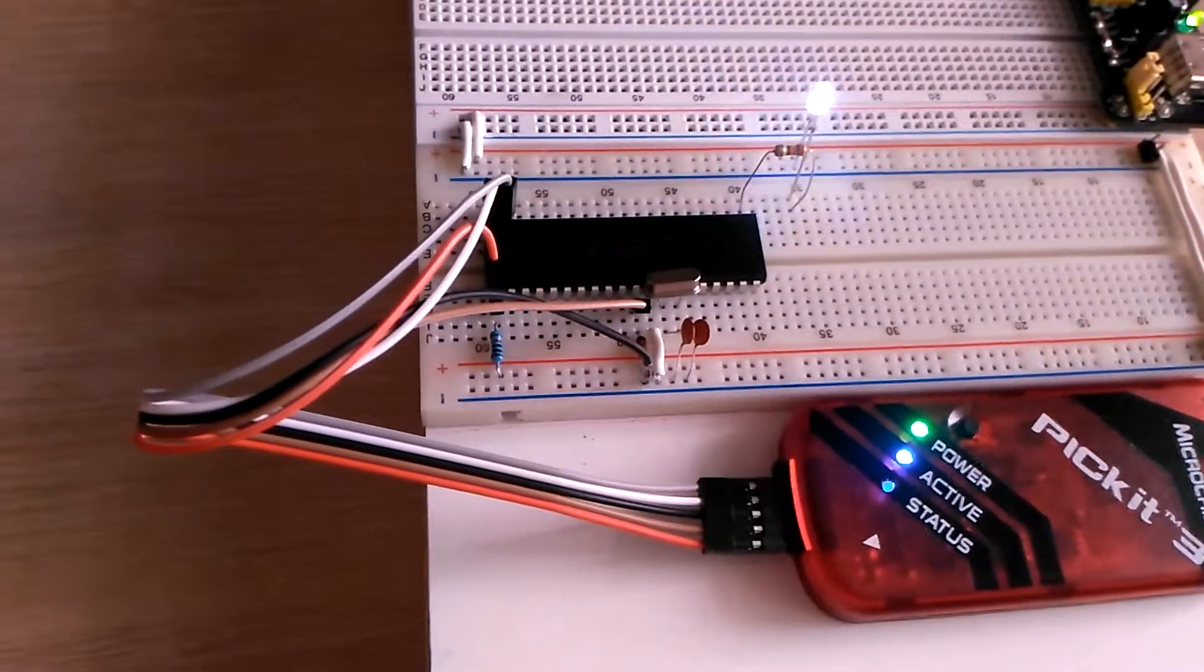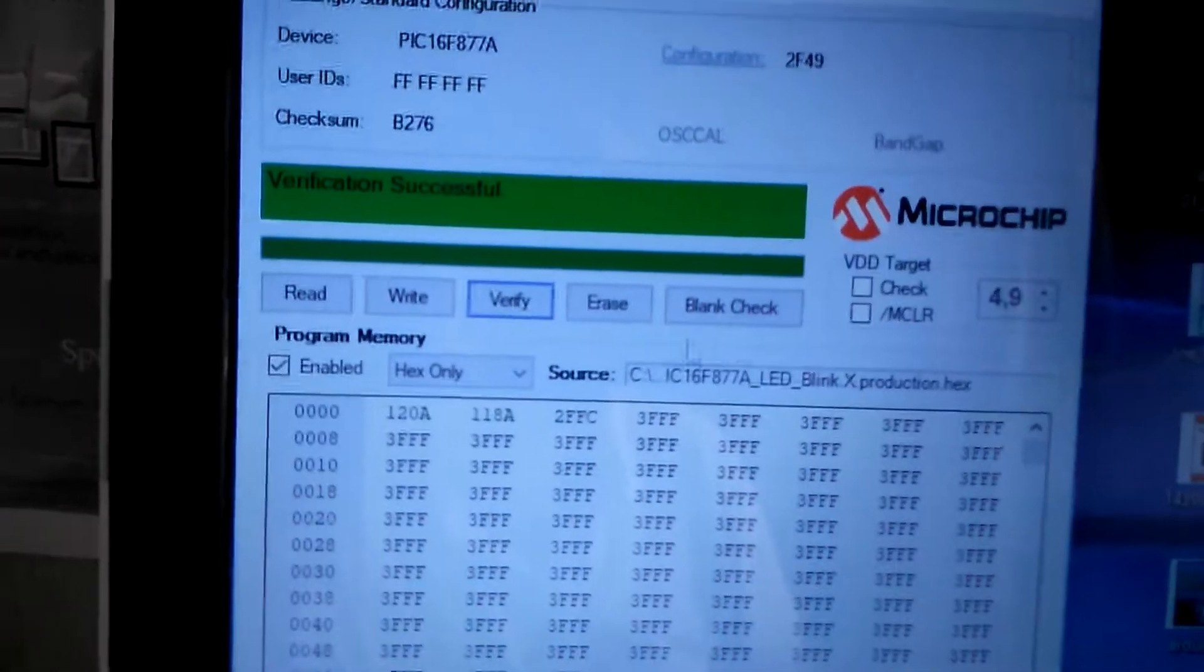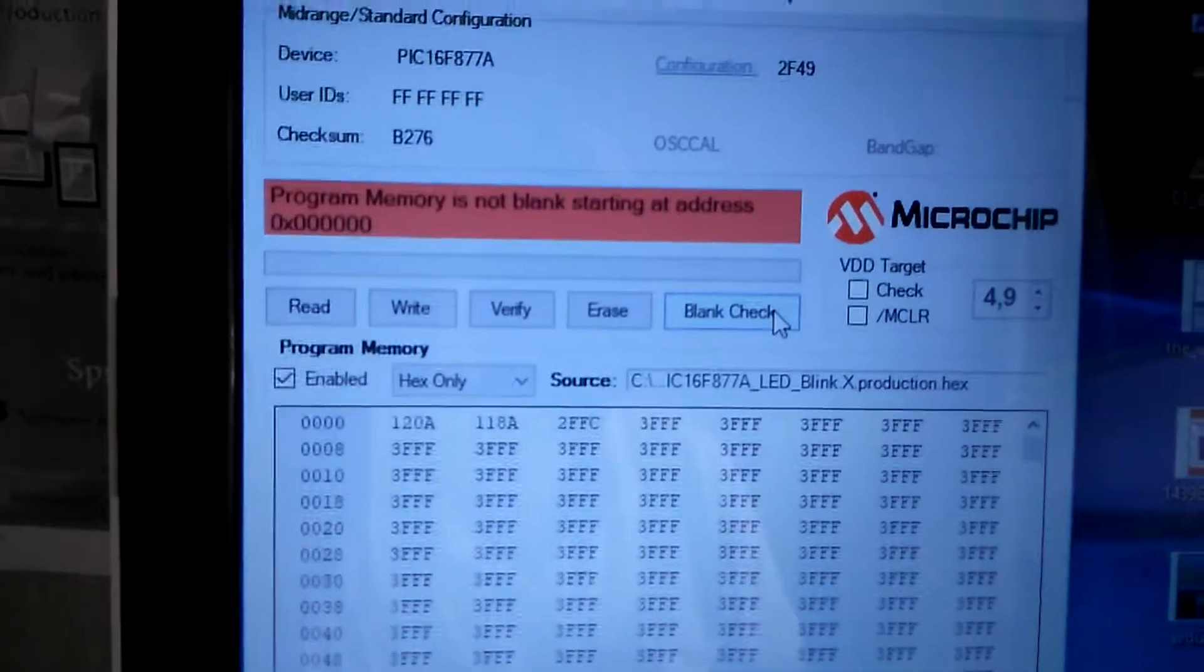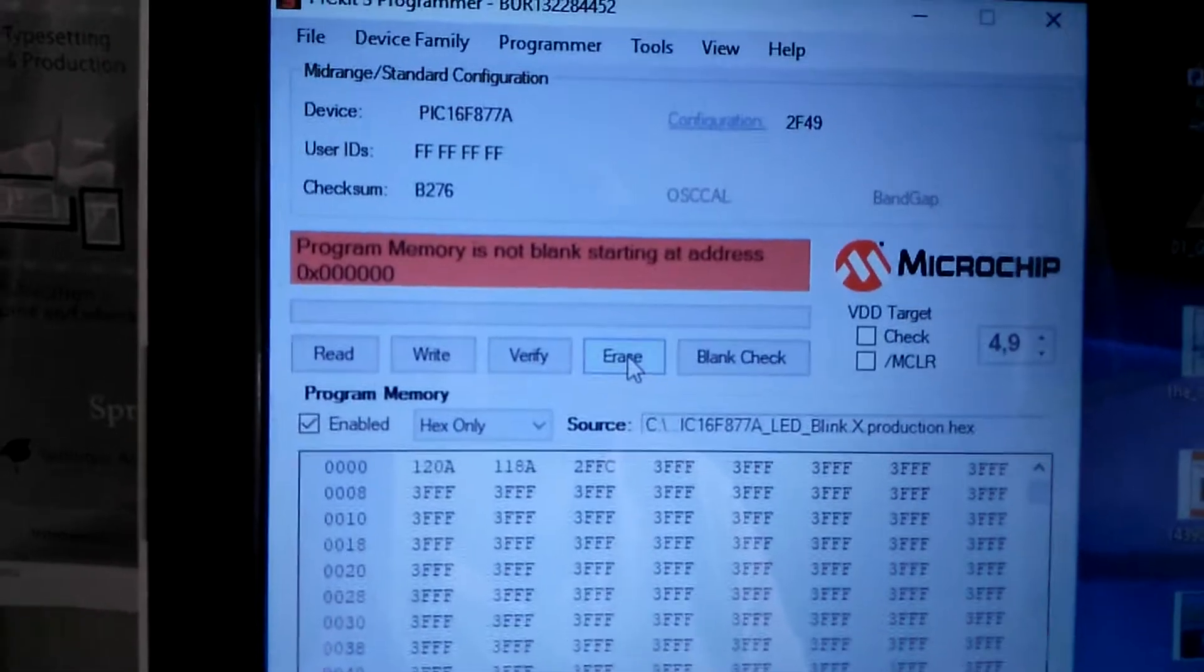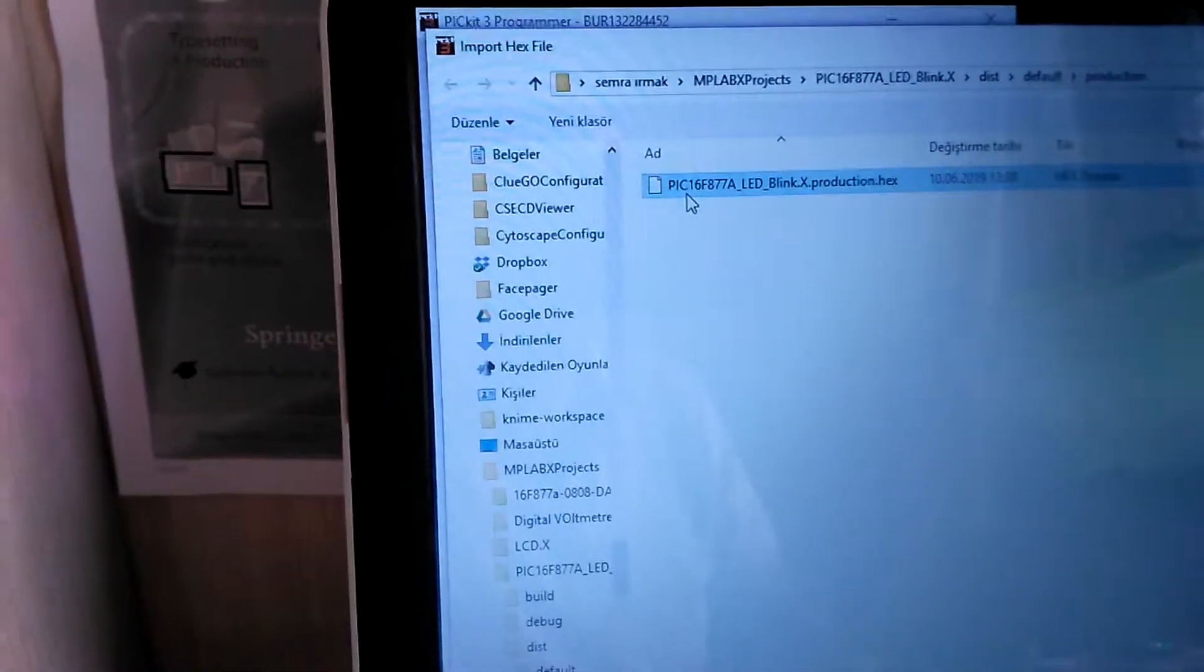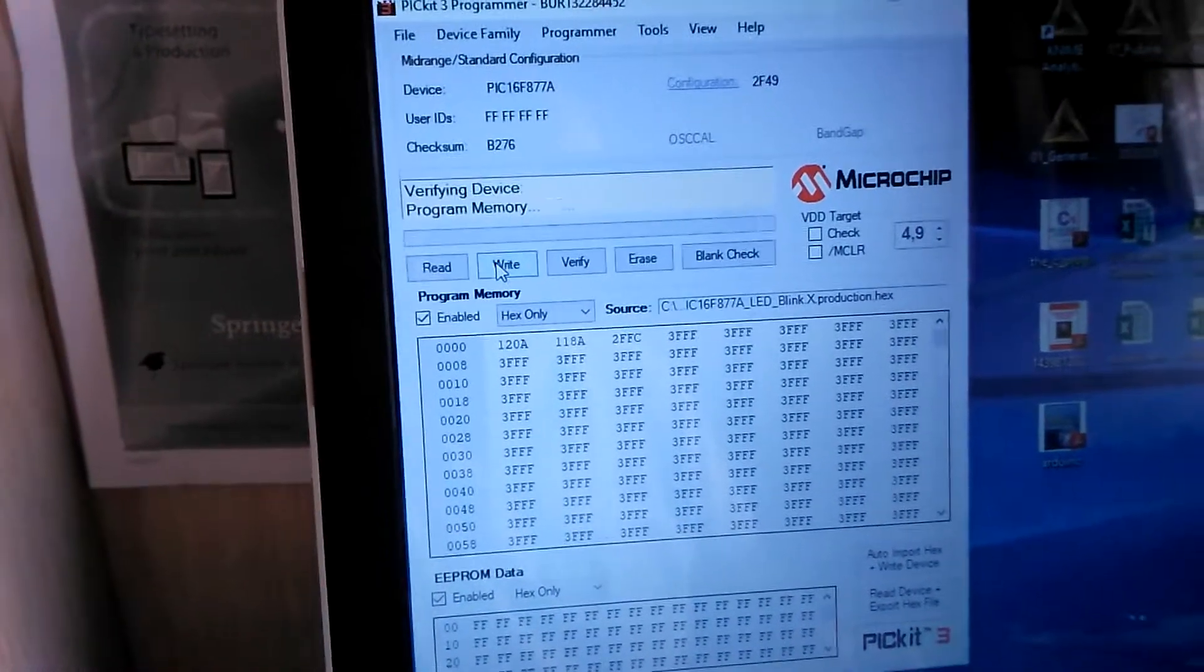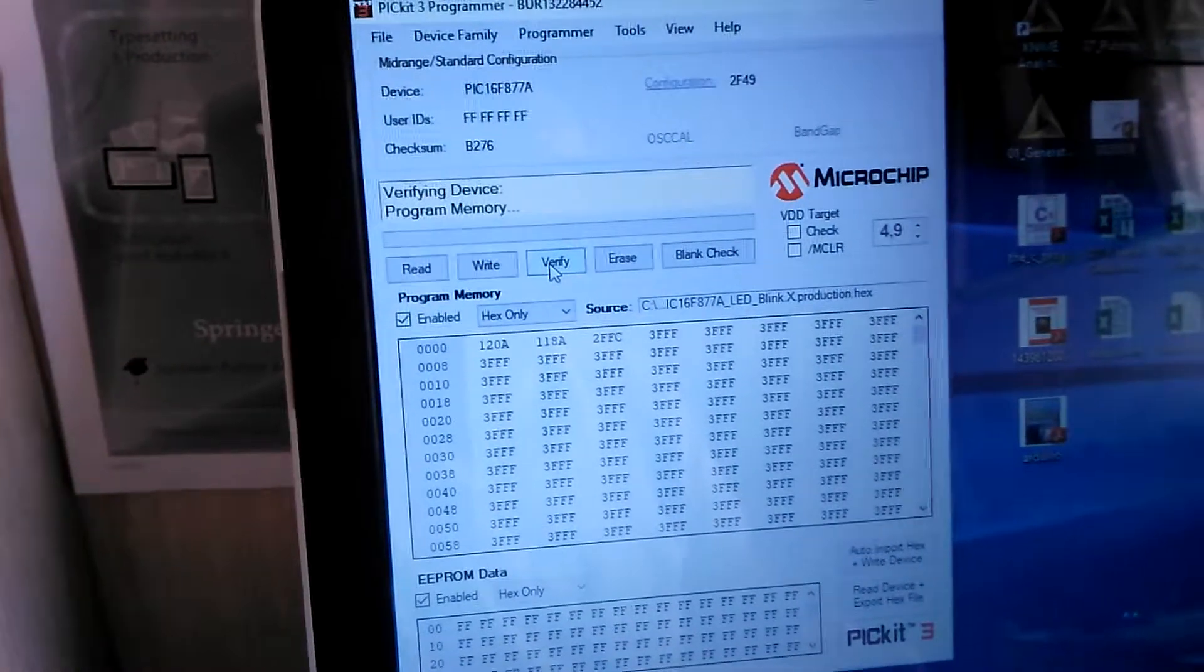Let's erase the program in the PIC and rewrite the program again. Let's check, blank check, erase it, blank stop. Let's read the import file. Let's write it to PIC. Let's check, verify. Now it begins.